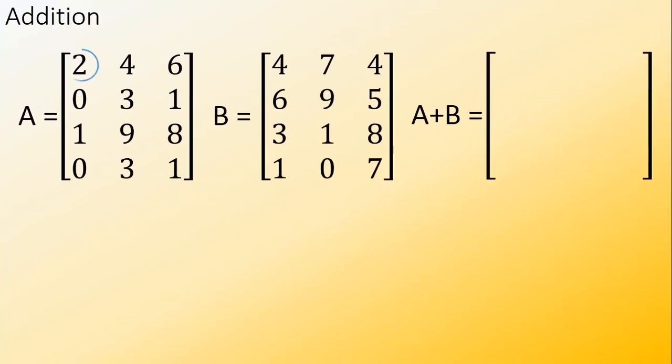So, 2 plus 4 equals 6, 4 plus 7 equals 11, 6 plus 4 equals 10, 0 plus 6 equals 6, 3 plus 9 equals 12, 1 plus 5 equals 6.